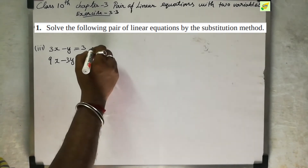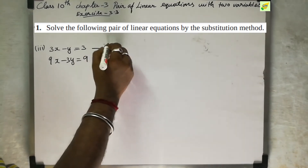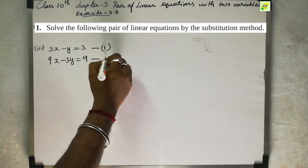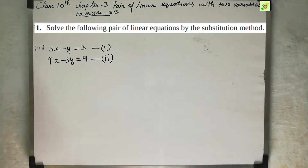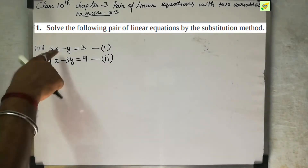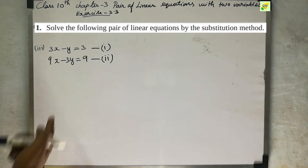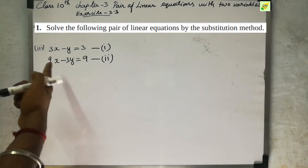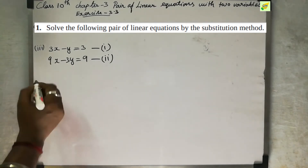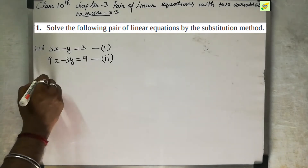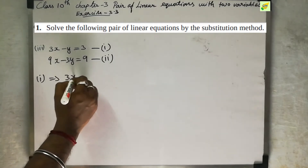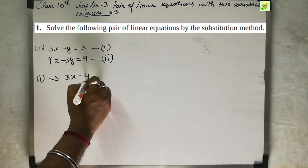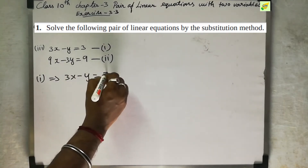So what do we do with the first equation? The first equation is 3x minus y equal to 3.